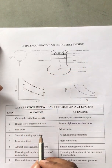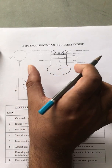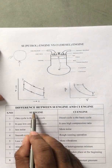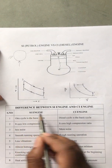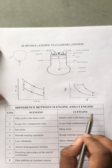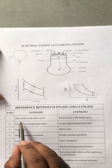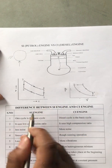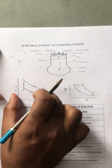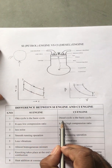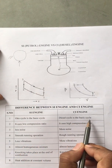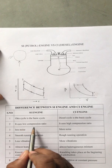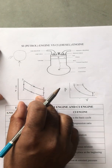Now let us see the differences between petrol engine and diesel engine. Petrol means SI - spark ignition; diesel means CI - compression ignition engine. The Otto cycle is the basic cycle for the petrol engine, and the diesel cycle is the basic cycle for the diesel engine.